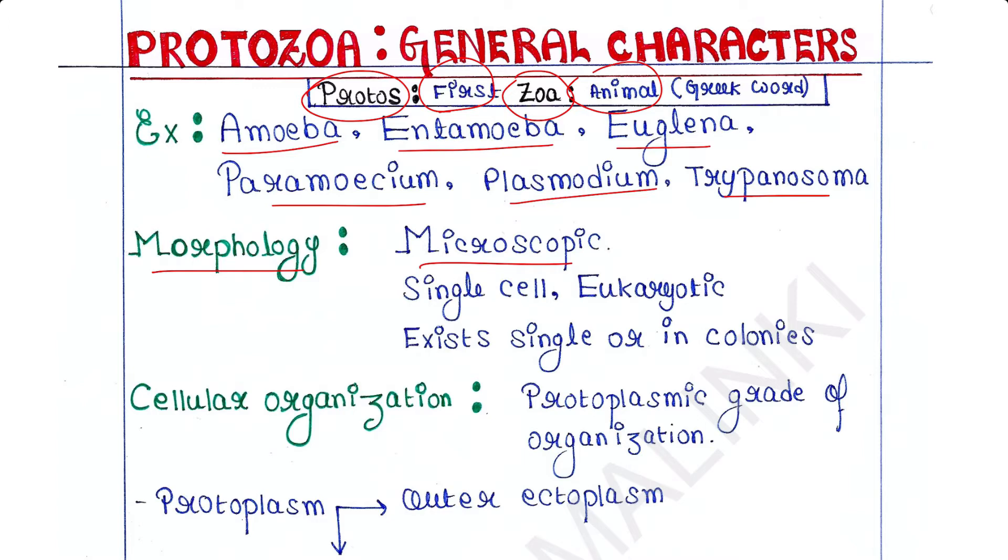It is a single-celled animal and eukaryotic. So remember this point always: that protozoa are single-celled eukaryotes. They exist single or in colonies.